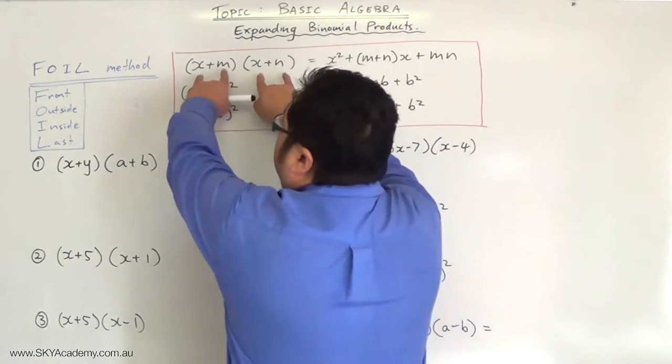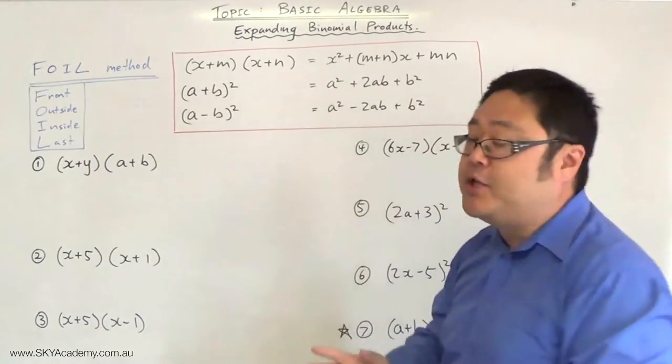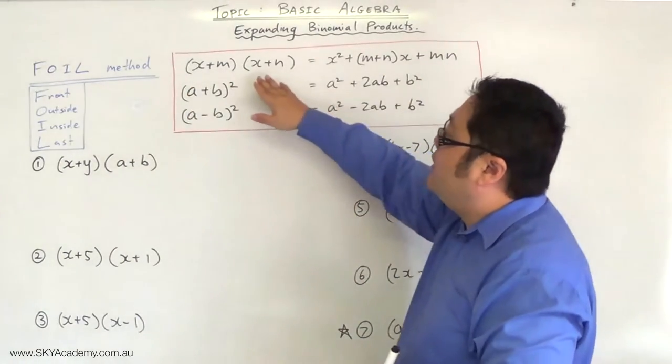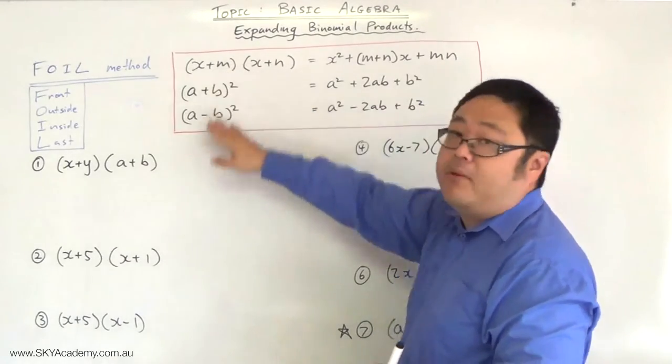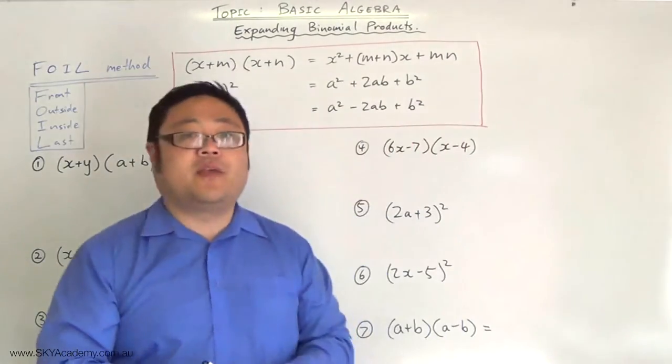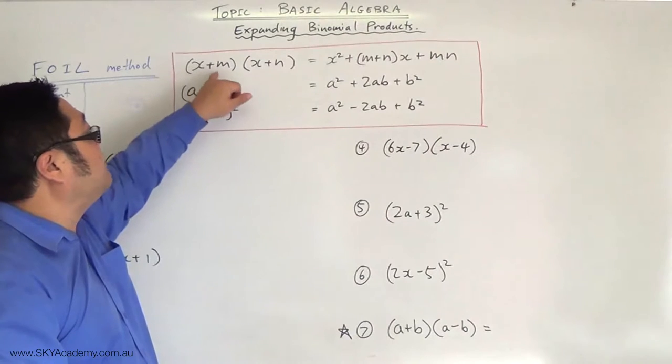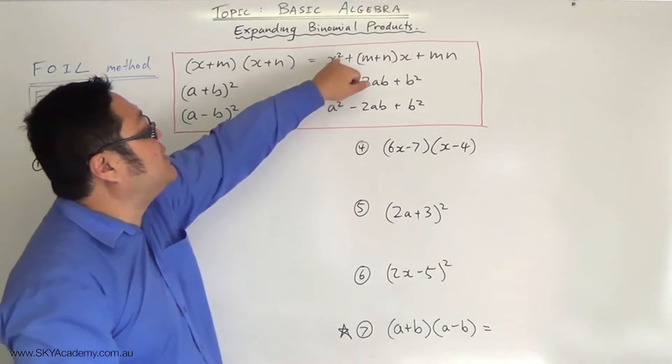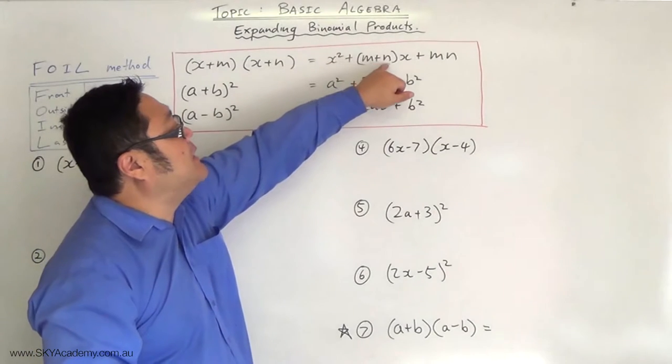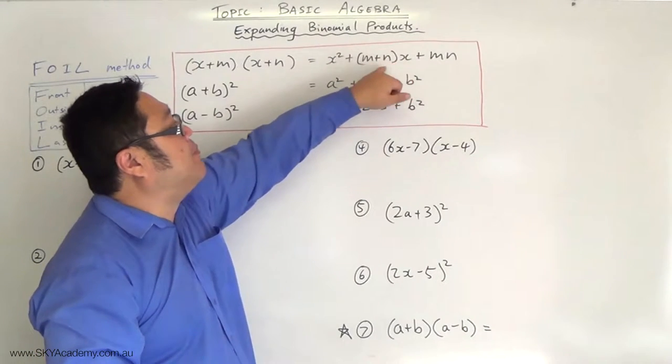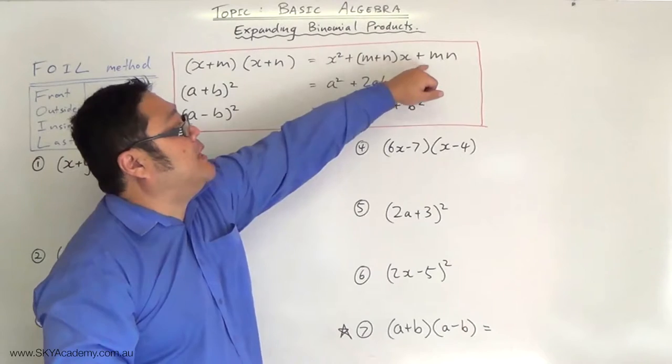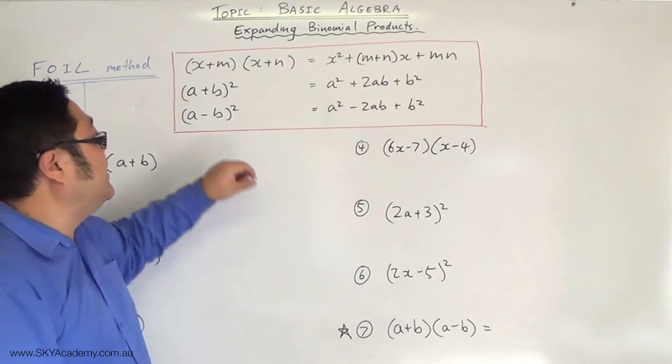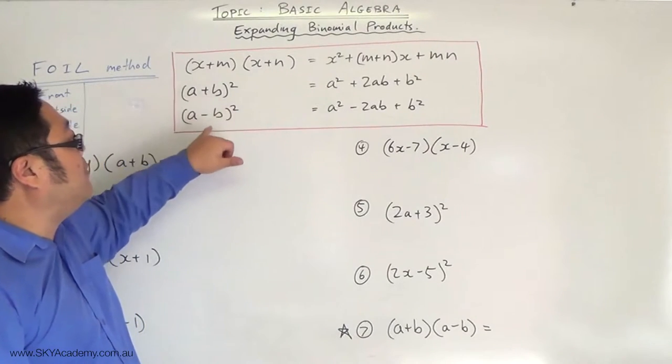Expanding two binomial products is called a binomial expansion, and here we've got three up on the board that you'll need to know. That is (x+m)(x+n) gives you x² + (m+n)x + mn. Rather than me repeating it, it's better for you to capture that visually. Then you've got what we call perfect squares.